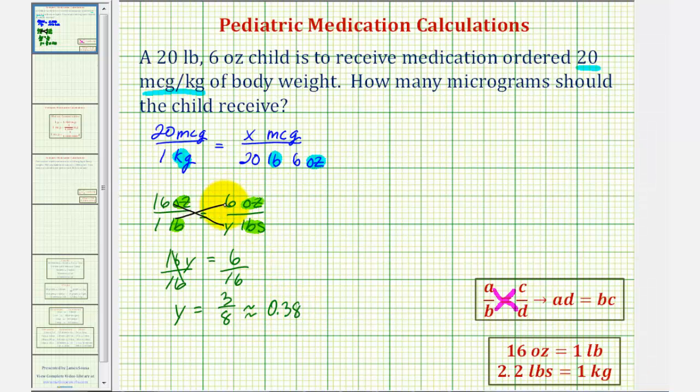Which means six ounces is approximately zero point three eight pounds. So now we can rewrite this as twenty point three eight pounds. But notice how we still have different units on the bottom. Here we have kilograms, and here we have pounds.